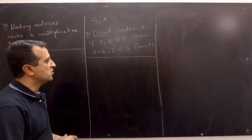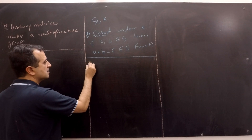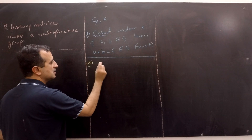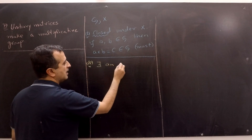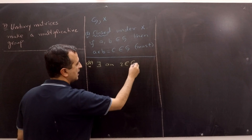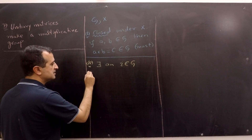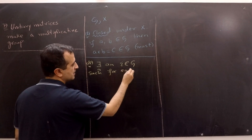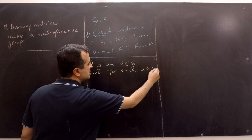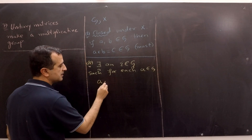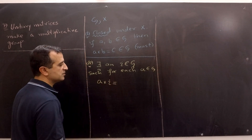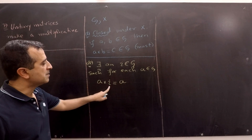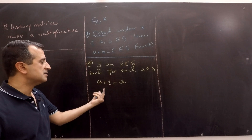The second property of the group is that there exists an identity element — let's say I, a member of G — such that for each element A, a member of G, A times the identity must equal A. So multiplying an element by the identity element will not change the element.